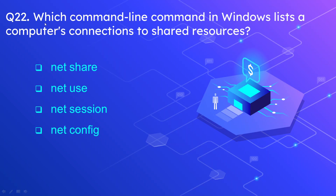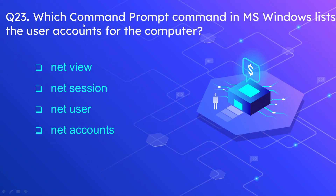Question number twenty-two: which command line command in Windows lists a computer's connection to shared resources? The options are net share, net use, net session, and net config. The correct answer is net use. Question number twenty-three: which command prompt command in Microsoft Windows lists the user accounts for the computer? The options are net view, net session, net user, and net accounts. The correct answer is net user.